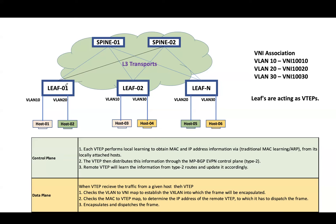When host 1 sends traffic to host 3, the traffic is received by leaf 1, which is known as VTEP. Leaf 1 encapsulates the traffic and sends it to leaf 2. Leaf 2 decapsulates the traffic and sends it to host 3. This covers the known unicast traffic flow where the destination MAC address is known.